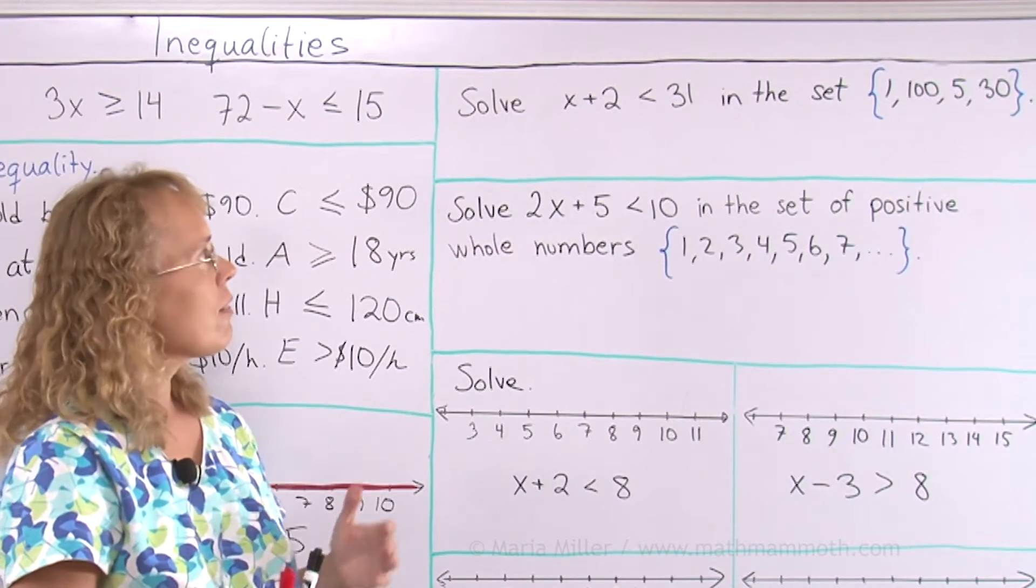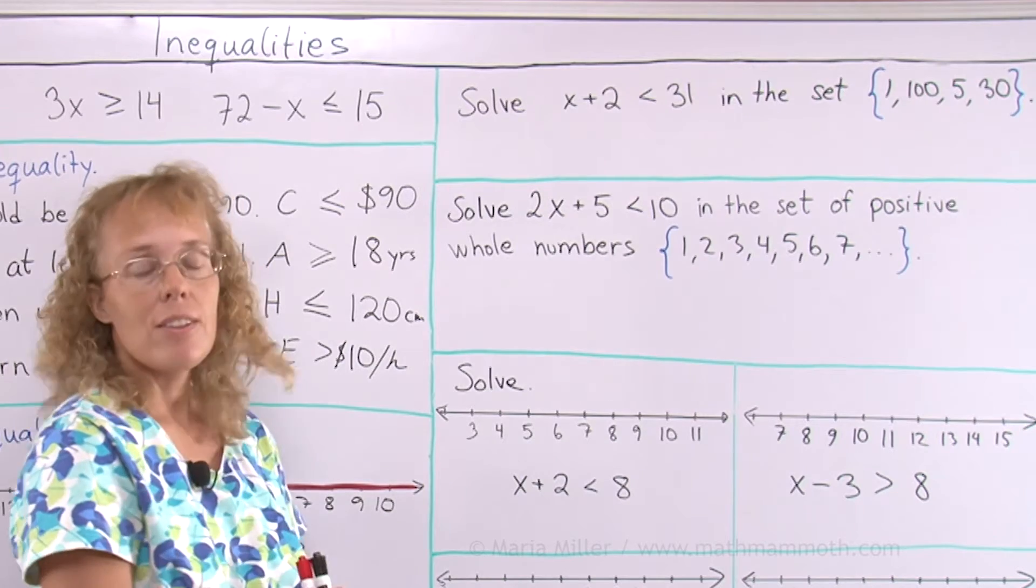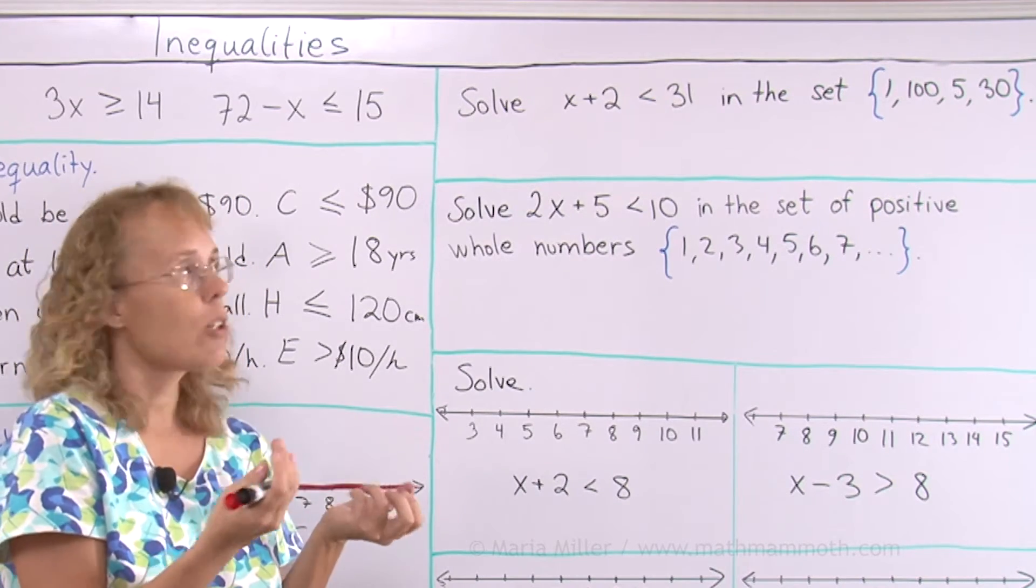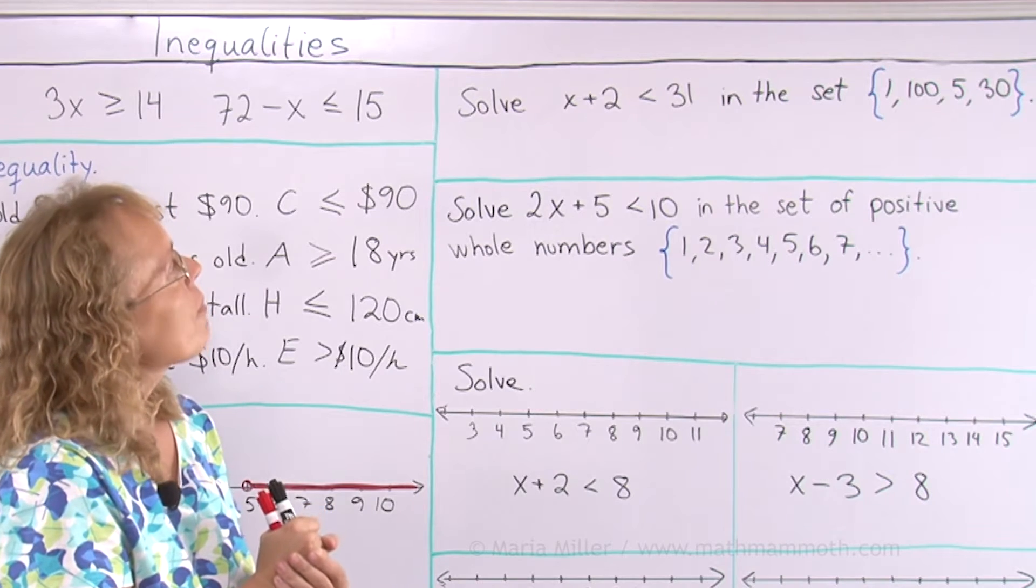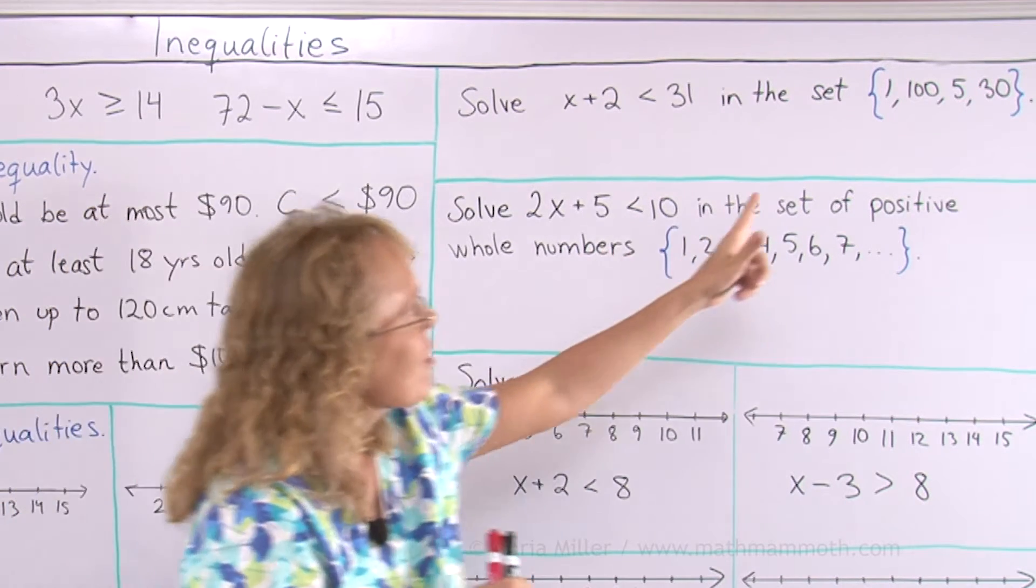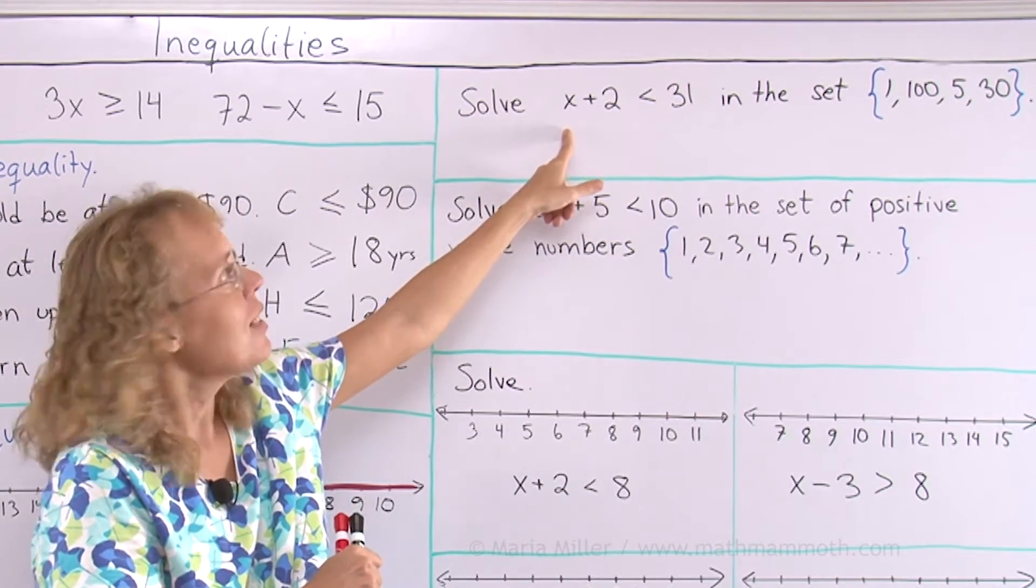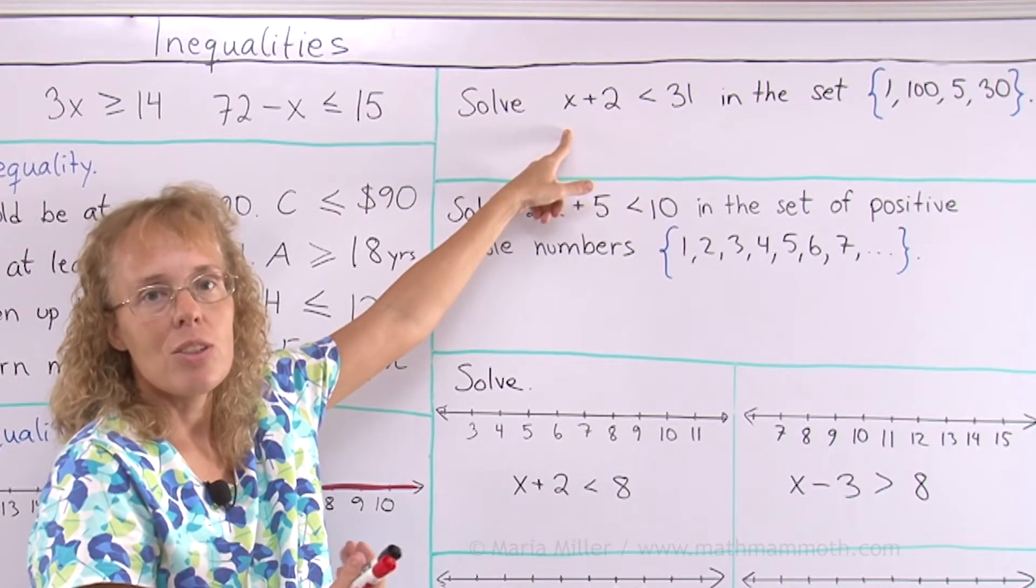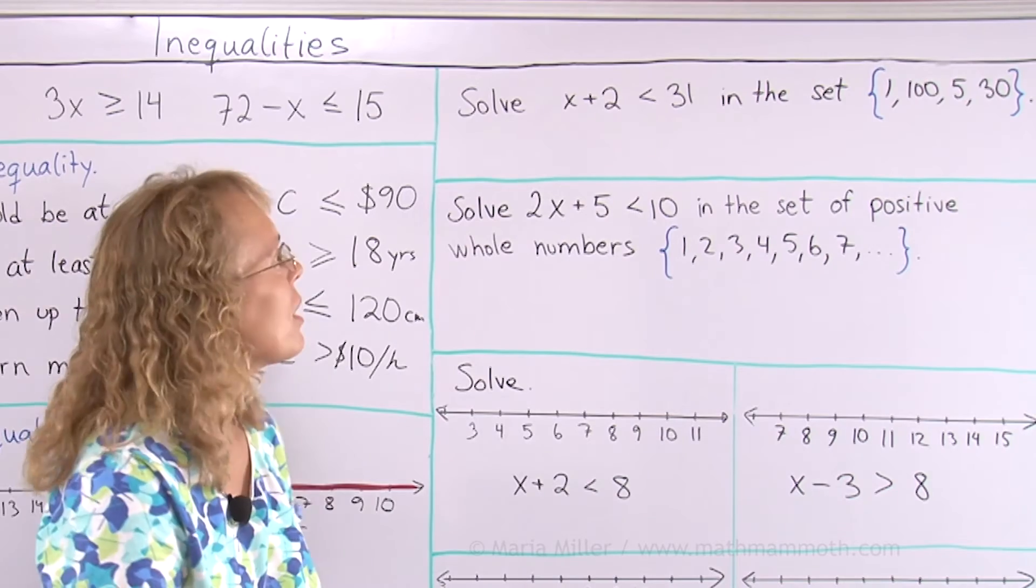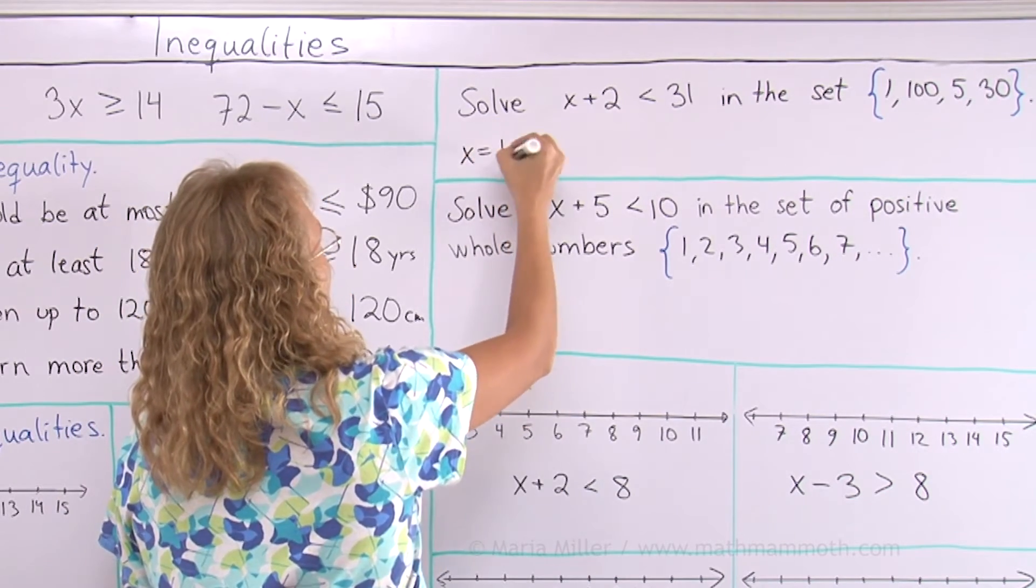Now solve x + 2 < 31 in the set {1, 100, 5, 30}. This is a very simple problem. All we need to do is try each one of these numbers from the set. Try them here in the place of x and see if the inequality is true. 1. I'll put 1 there. 1 plus 2, well that's less than 31. So x could be 1. So I'll write here x equals 1.